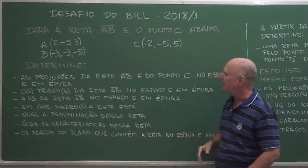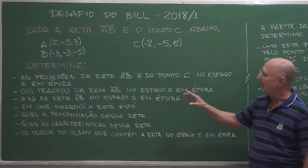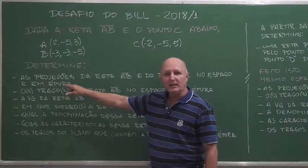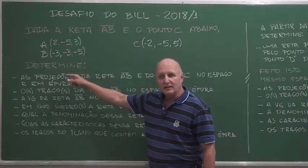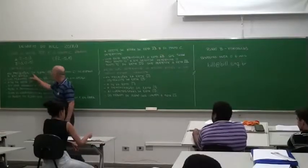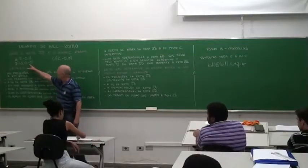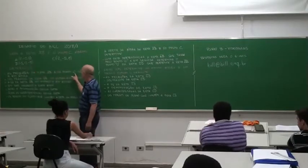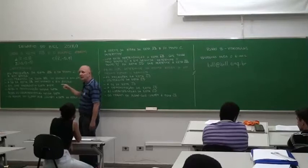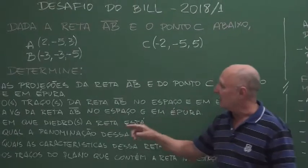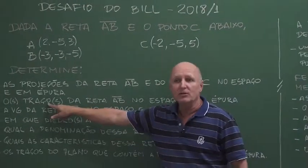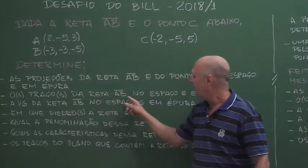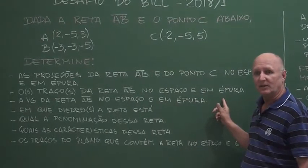What do you want to do in this challenge? You will determine in space the projections of AB — these two points I am giving you — and point C also, in space and in epoch. Then, determine the trace of line AB, in space and in epoch.